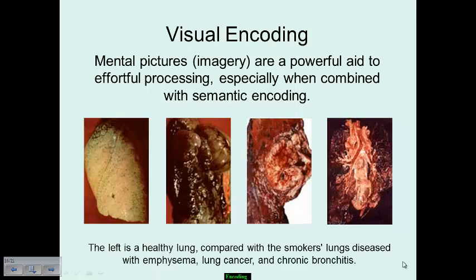Visual encoding seems to be some of the most powerful, particularly when it comes to effortful processing, because mental imagery is a powerful aid — we are very much a visual generation and need to see things to really understand them. When we talk about semantic encoding, semantic simply means the meaning of something. So it's one thing to talk about diseases of the lungs like emphysema, lung cancer, or bronchitis, but it's something else to show those images. Those are very powerful tools, and you'll be more likely to remember and store that information because of the imagery provided.